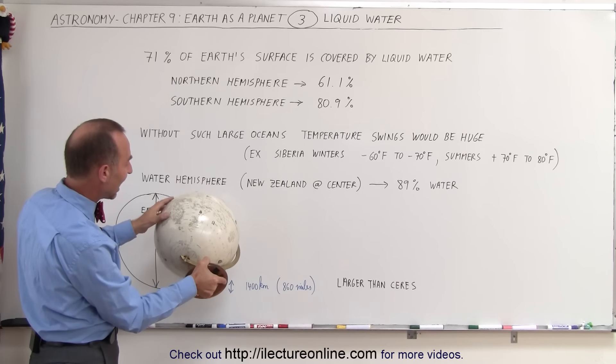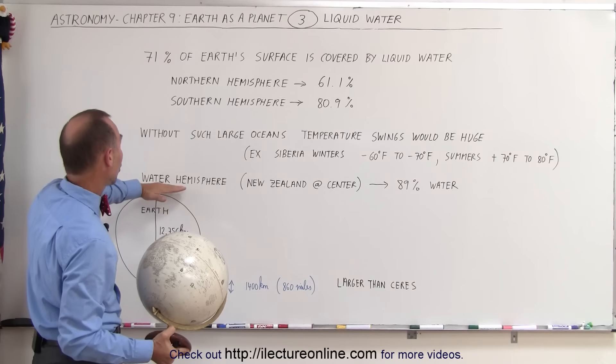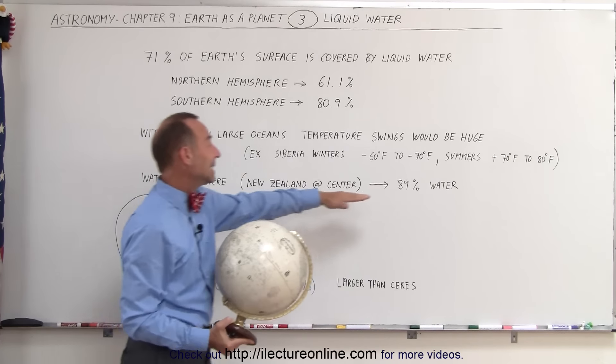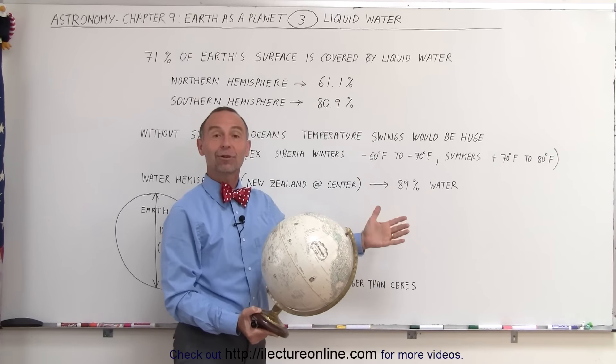For the rest, you wouldn't see any other land masses. When you look at the Earth from this perspective, that's called the water hemisphere. 89% of that half of the globe is covered by water. Absolutely astonishing.